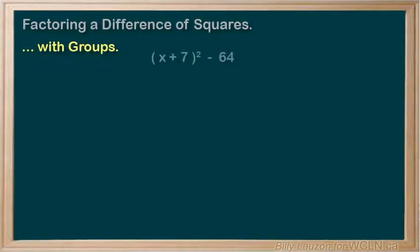In the example below, we have (x + 7)² - 64. You may already recognize this as a difference of squares, but to make it more obvious, let's replace the x + 7 with the letter u.